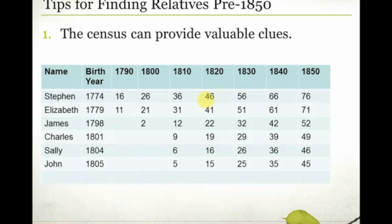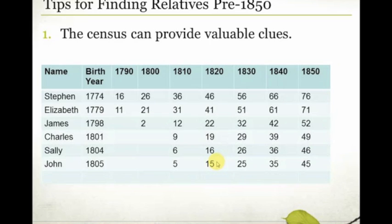I look for all the Stephen Baileys — I don't just find one and assume I've got the right person. I also use location information about where the family should be living for more clues. This simple exercise really helps with pre-1850 census research. Use those censuses to track family movements and how the family grows or shrinks. For example, by 1820 Sally had married and left the house, so I could use my list to account for one fewer family member in that census than the decade before.